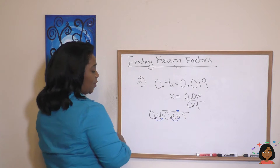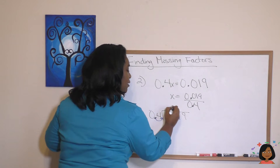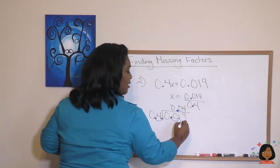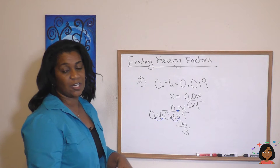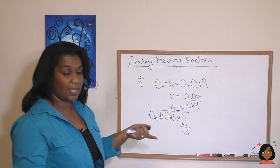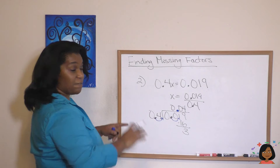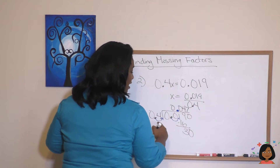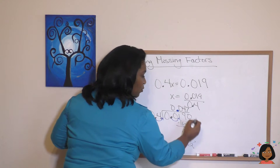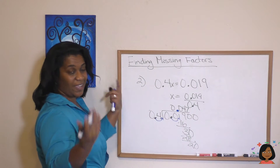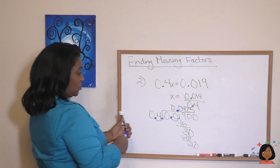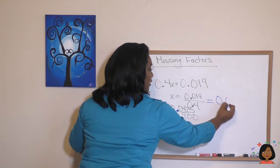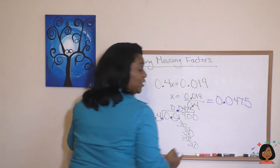Now let's do the math. 4 goes into 0, zero times. 4 into 0, zero times — so we put a 0. 4 goes into 1, zero times. 4 goes into 19, four times — we have 16, with 3 left over. We keep going until we get a complete decimal. Add a 0: 4 goes into 30 seven times — that's 28, leaving 2. Add another 0: 4 goes into 20 five times, and we're done. The answer is 0.0475.